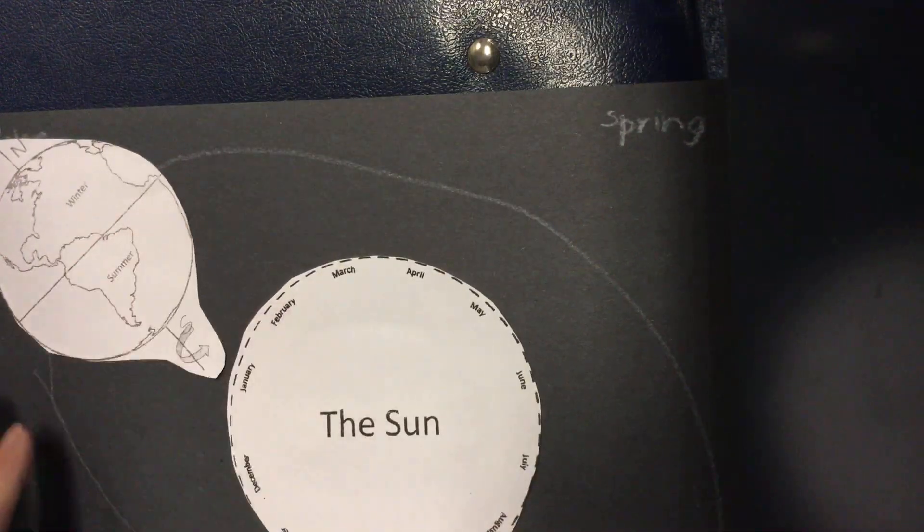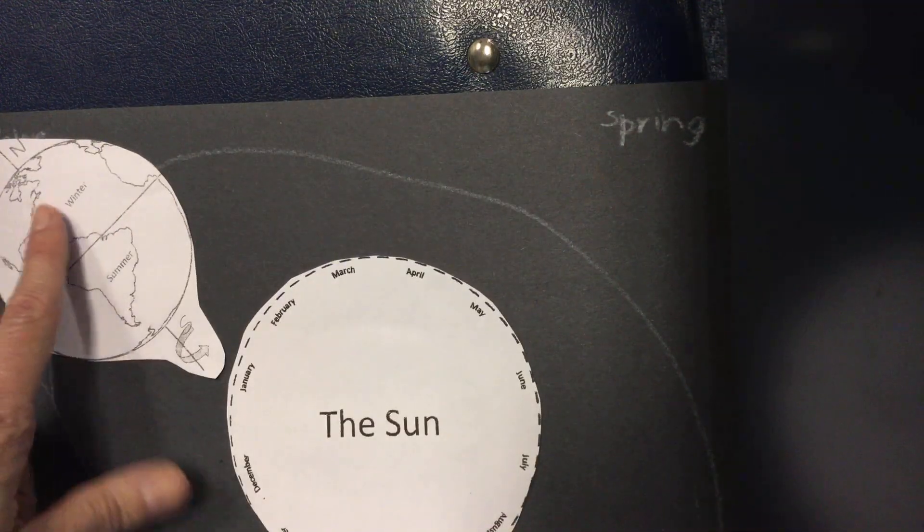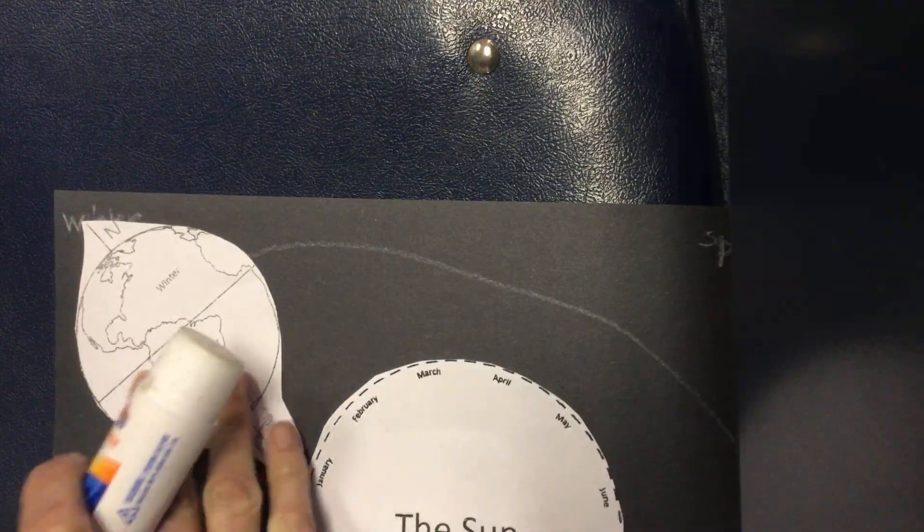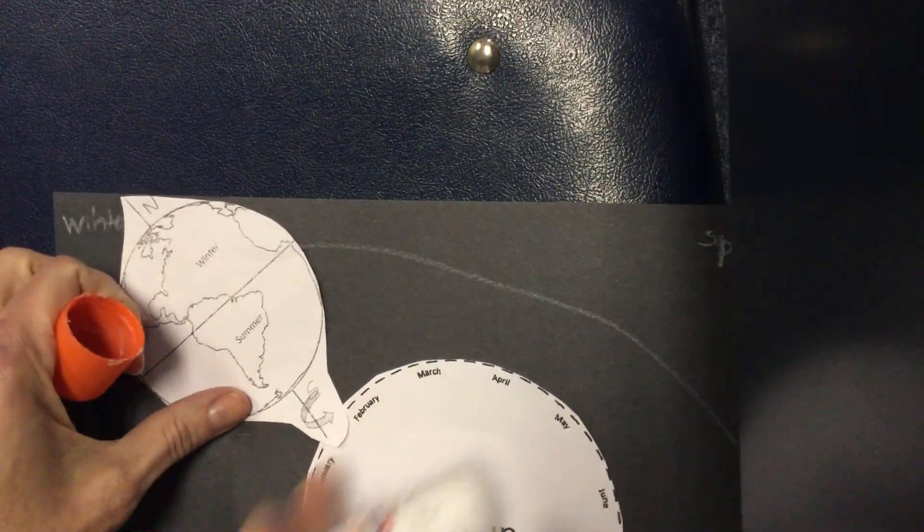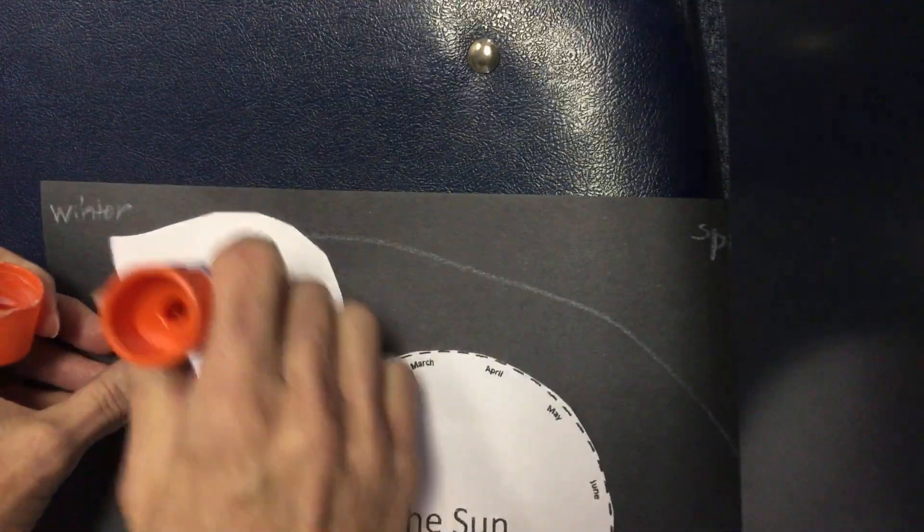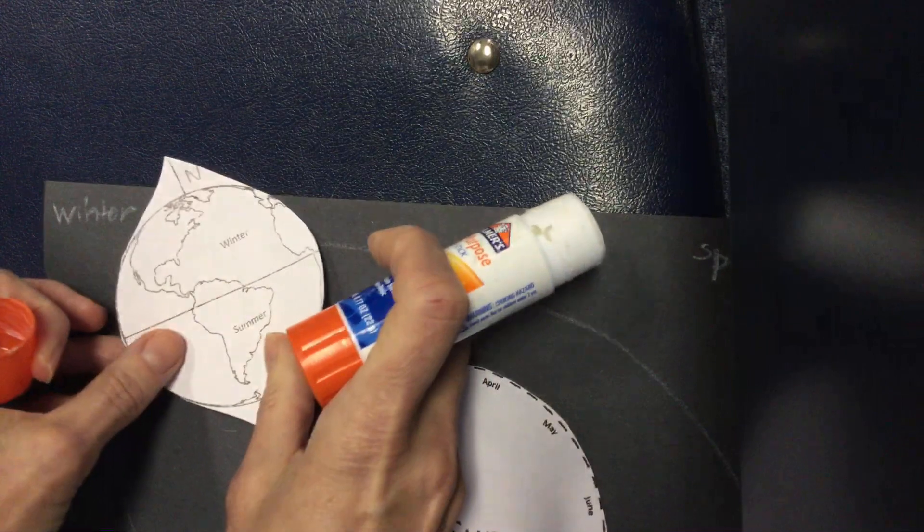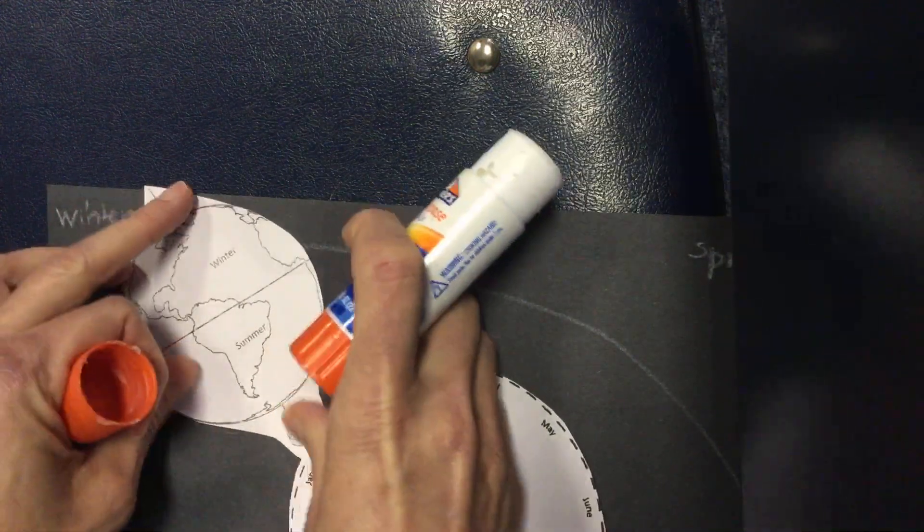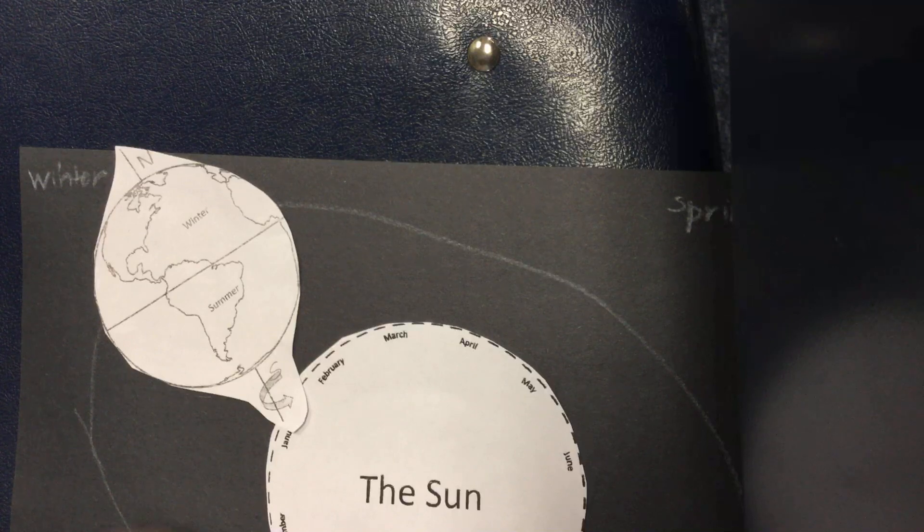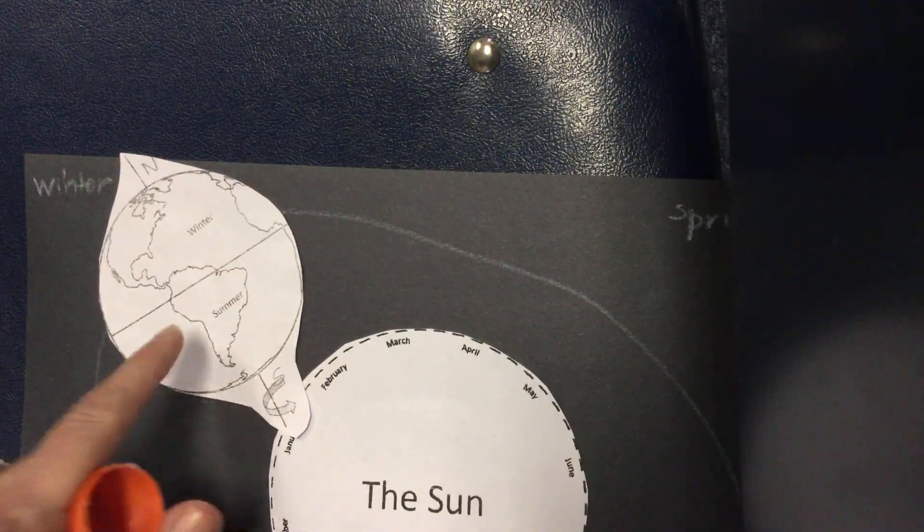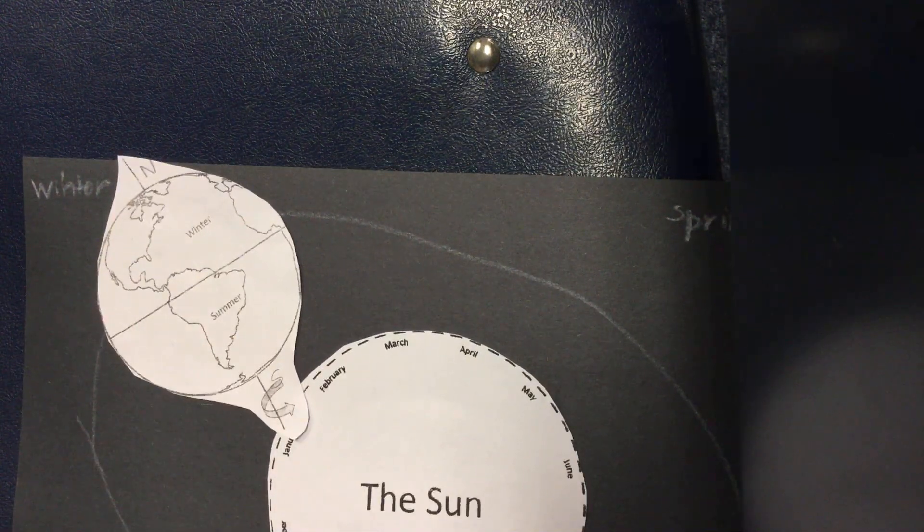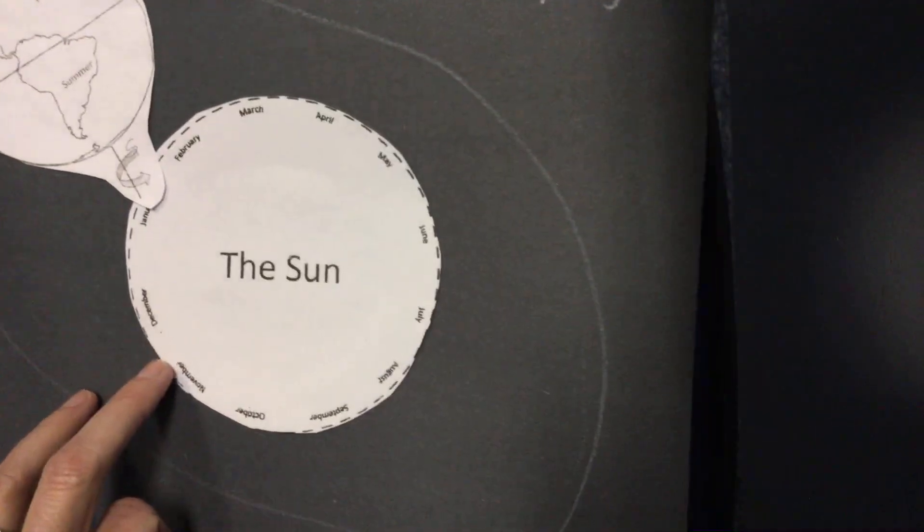So we're going to glue our winter, northern hemisphere in the winter, right over here about where we are right now. You're going to have a little overlap just because it's a small piece of paper, so put some glue on that and right up here. This is where we're at—we're about right here right now and we are in the dead of winter, and they are experiencing the height of summer.